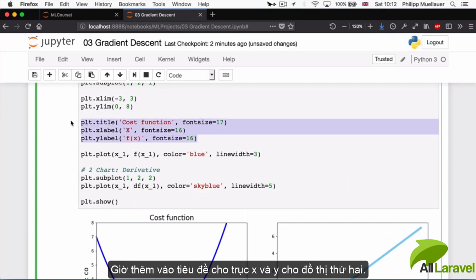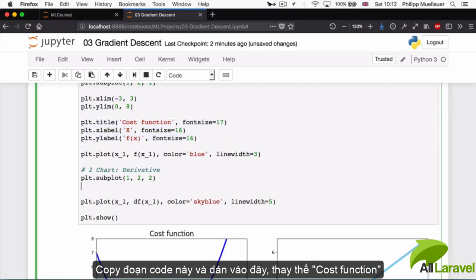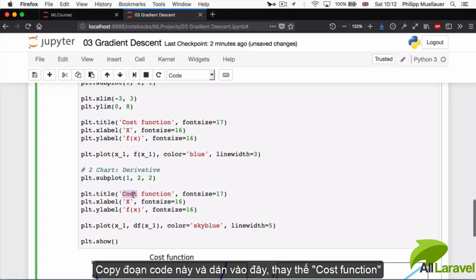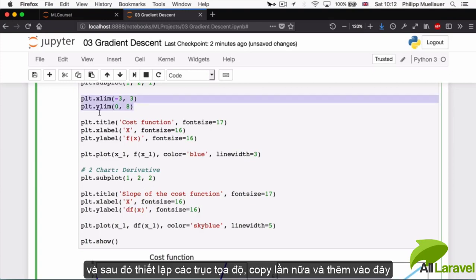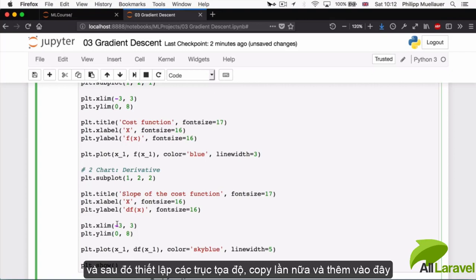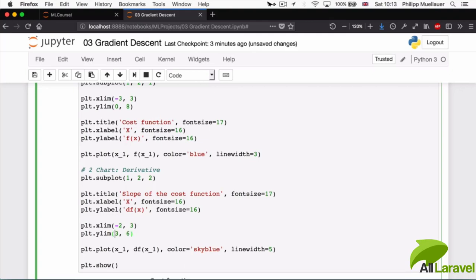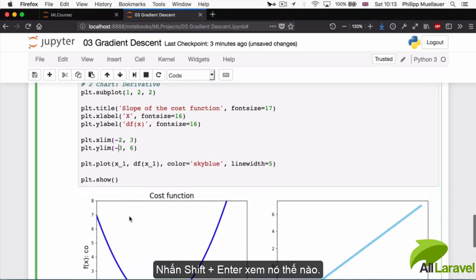Now let's add some title and x labels and y labels to that second chart as well. So I'm just going to copy this code here and add it here. But instead of having it say cost function, I'm going to say slope of the cost function. And on the x it's still x, but on the y it's going to be df of x. And then I'm also going to set the axes. So again, I'm going to copy xlim and ylim, and add this down here. But I'm going to have it go from maybe minus 2 to 3. And from on the y, from say, minus 3 to 6. So shift enter, see what it looks like.